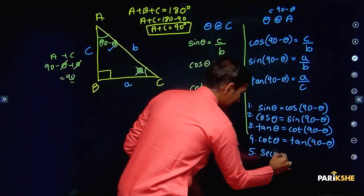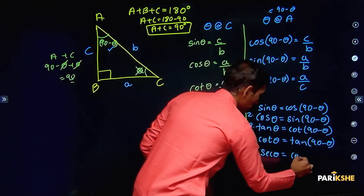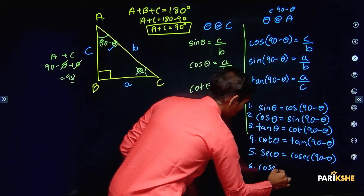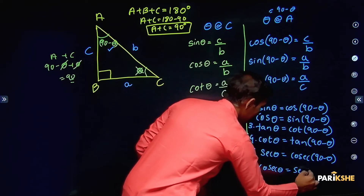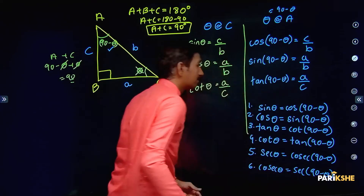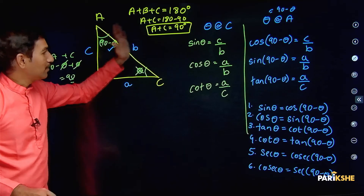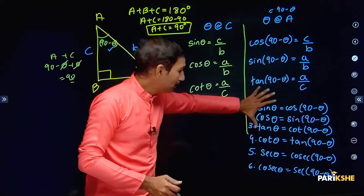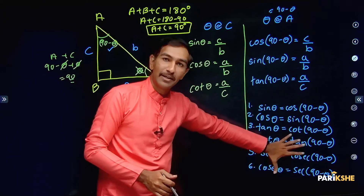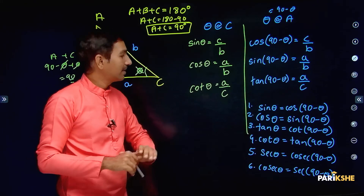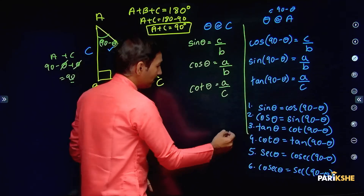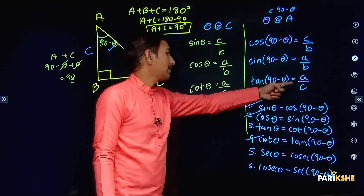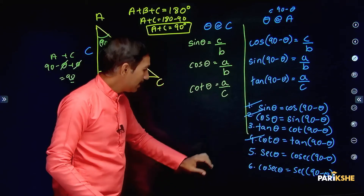Similarly, fifth: secant theta is equal to cosecant(90 minus theta). And sixth: cosecant theta is equal to secant(90 minus theta). So these are our six complementary angle formulas. Please take a screenshot or note these down. You can also check your book or video for reference. Cot theta equals tan(90 minus theta) — A by C equals A by C.